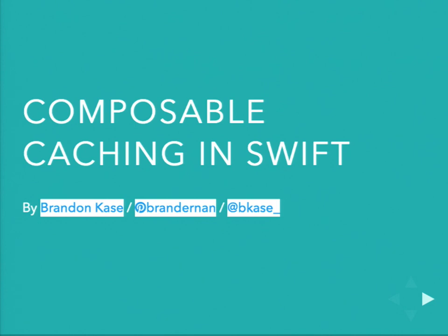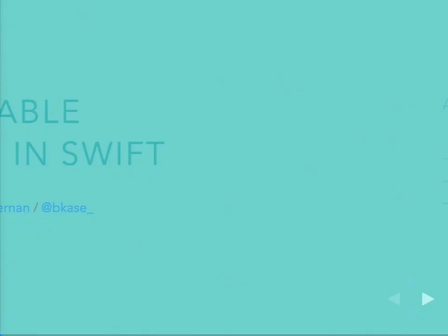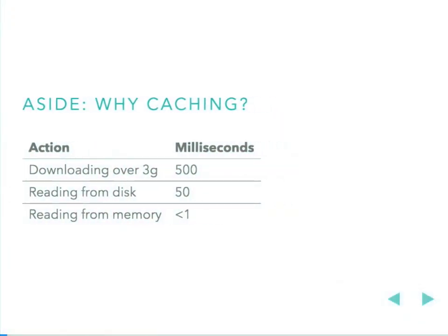We're going to be talking about caching at the application level. Just a reminder — why do we want caching? Getting things over the network is slow. Getting things from disk is faster. Getting things from memory is faster still. But we have limited memory and limited disk.